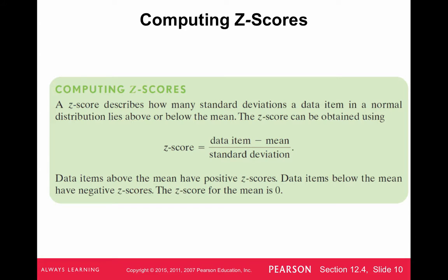Z-scores are a really important concept to determine how many standard deviations a particular data value is from the mean. The formula is: you take the data item, subtract the mean, and divide by the standard deviation. Data items above the mean have positive Z-scores, while data items below the mean will have negative Z-scores. The Z-score when you're equal to the mean is zero, because the difference in the numerator will be zero.